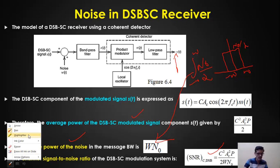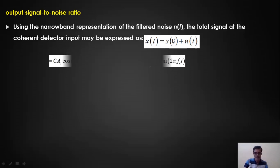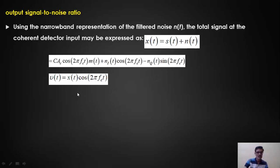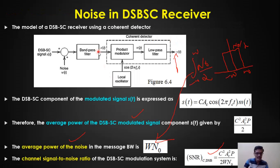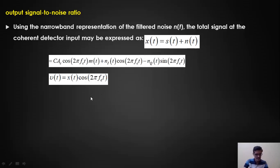To find the output SNR, the demodulator input is x(t) = s(t) + n(t). Substituting s(t) = c·Ac·cos(2πfct)·m(t) and n(t) = nᵢ(t)cos(2πfct) − nq(t)sin(2πfct), this signal x(t) is multiplied by cos(2πfct) to produce v(t), which is then passed through a low-pass filter.